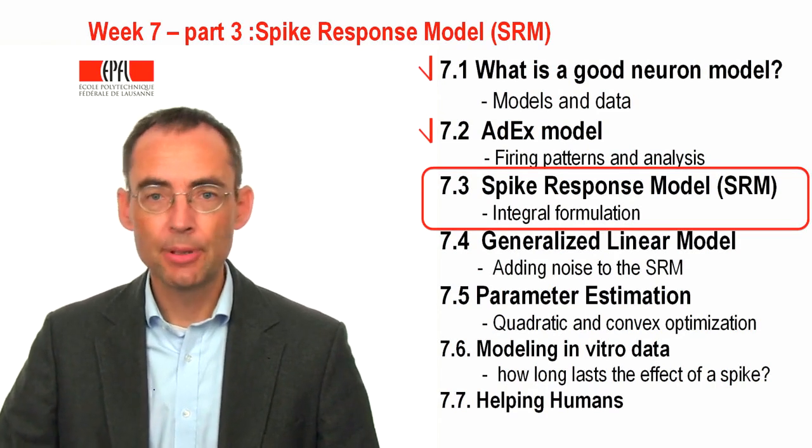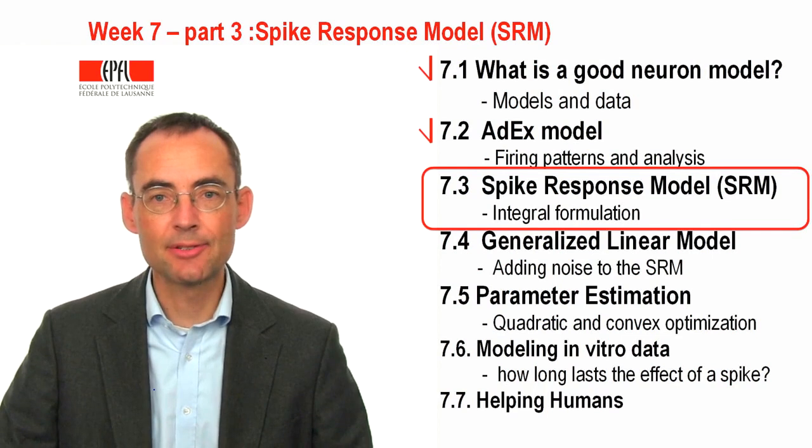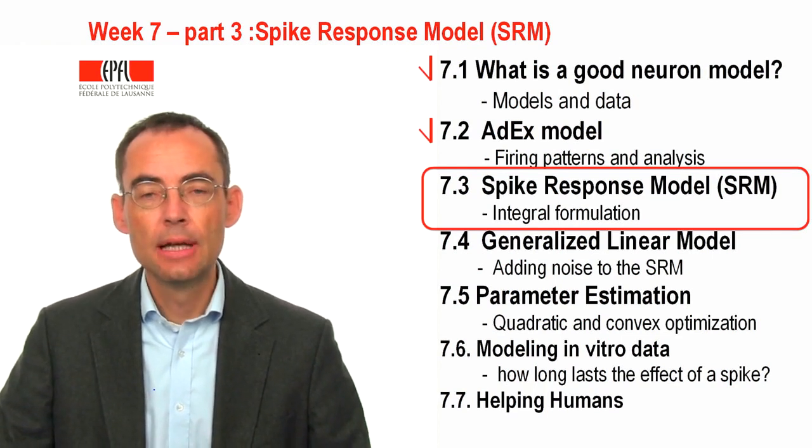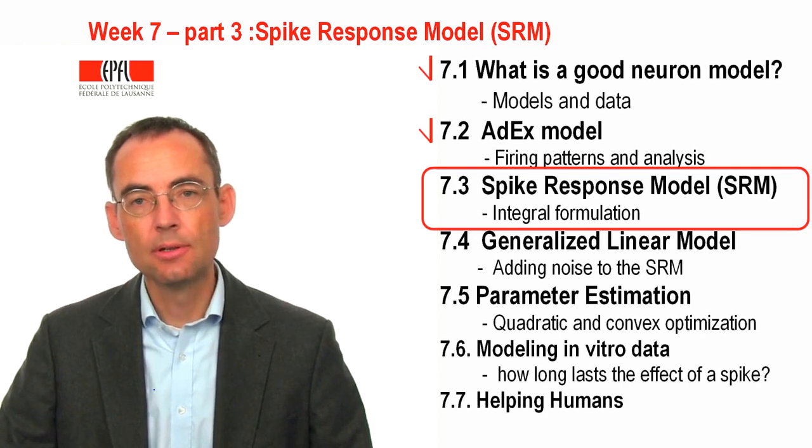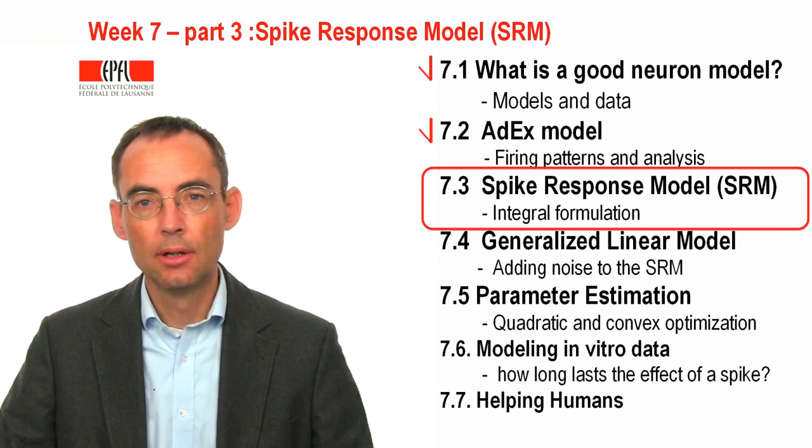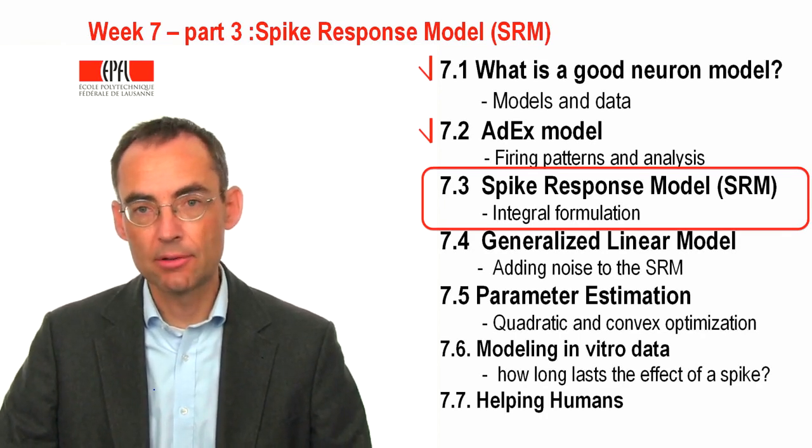Welcome to the third part of week 7 of the class Neuronal Dynamics. We have seen that adaptation together with an exponential integrate-and-fire model can account for a variety of firing patterns, in particular for adaptation.